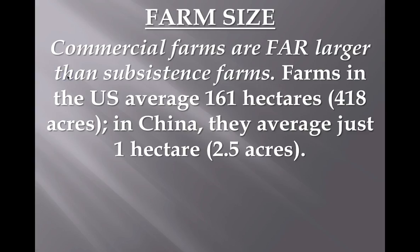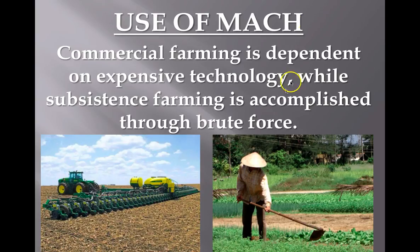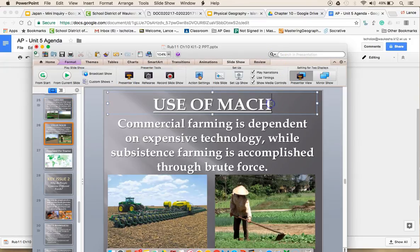A big difference between commercial and subsistence farming is farm size. Commercial farms are far bigger — on average, the United States has 161 hectares, while China averages one. For these big farms, you have to use a lot of machinery, while subsistence relies on hand tools. This is why the US can compete at the international scale with agriculture — 2% of the labor force in the United States and Canada grows food not just for Americans but for people all over the world, creating a surplus.